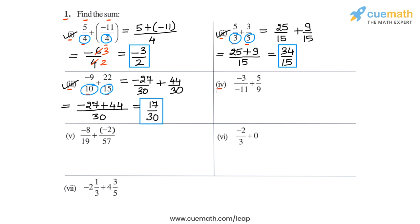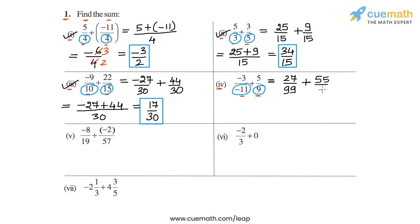Now we come to part 4, in which we have to calculate -3/(-11) + 5/9. The denominators are -11 and 9. The LCM of 11 and 9 is 99. So let's write both as equivalent rational numbers with denominator 99. To convert -3/(-11), we multiply above and below by -9, which gives us 27/99. And similarly, the second number 5/9 can be written as 55/99.